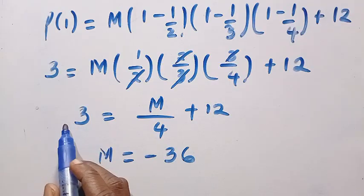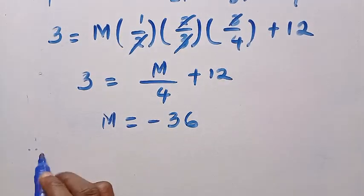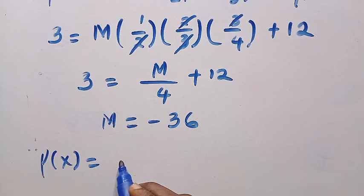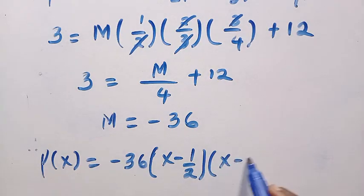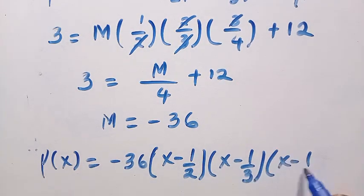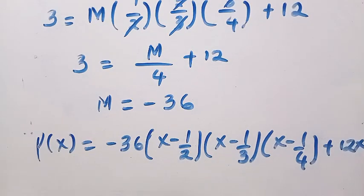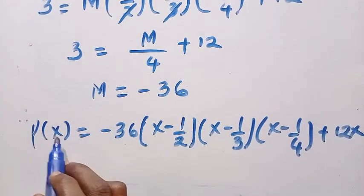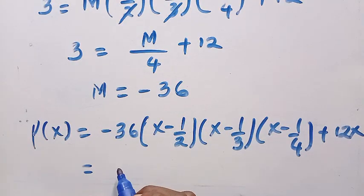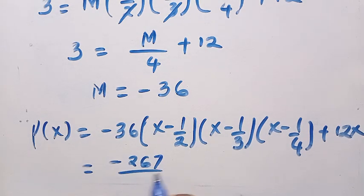So we have P of x equals negative 36 times (x minus 1 over 2) times (x minus 1 over 3) times (x minus 1 over 4), plus 12x. Substituting x equals 2, the final answer for P of 2 is negative 267 divided by 2.